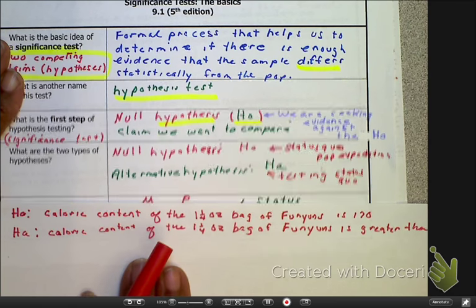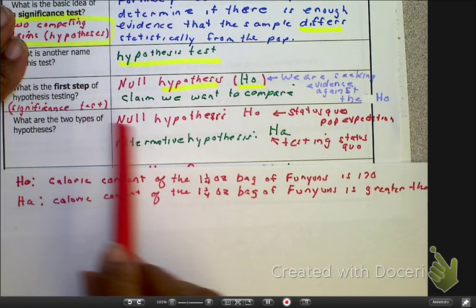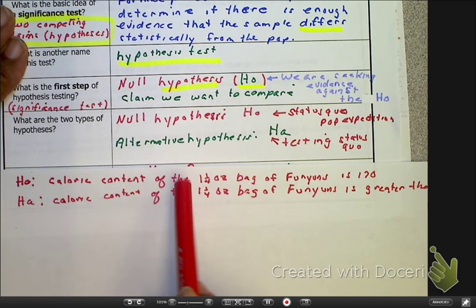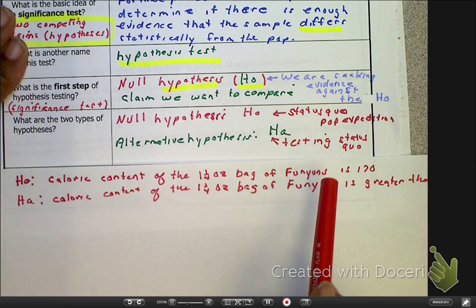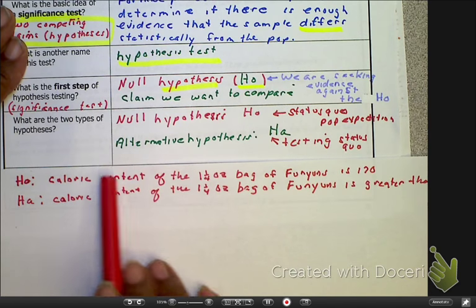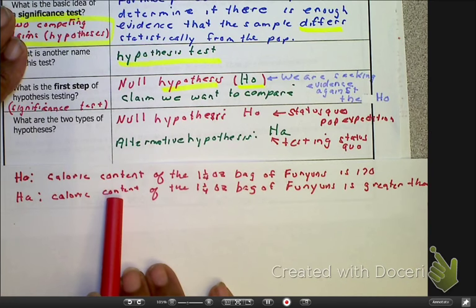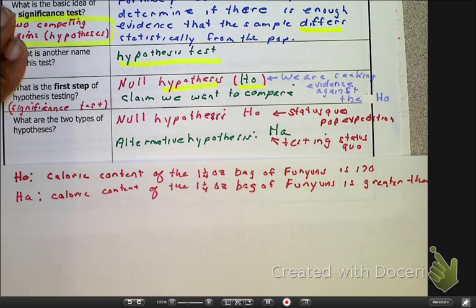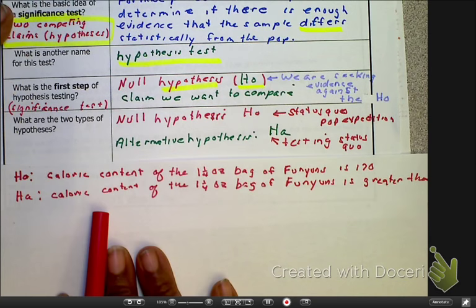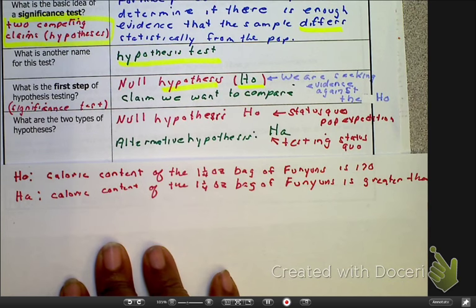Now, we're going to put these in symbols in a few, but I wanted to show you the idea between null hypothesis. Remember, that's the status quo, company expectation, the population parameter. And then, you have your alternative hypothesis is what we're saying, I don't think so. It's different. And then, what do they say? Prove it. So, that literally is what a hypothesis test, a significance test, remember the same thing, what the purpose of it.